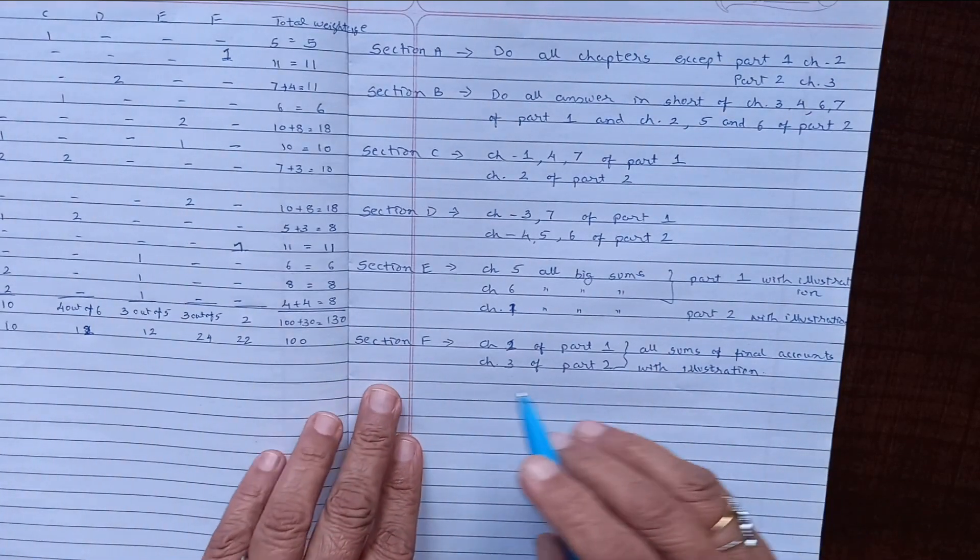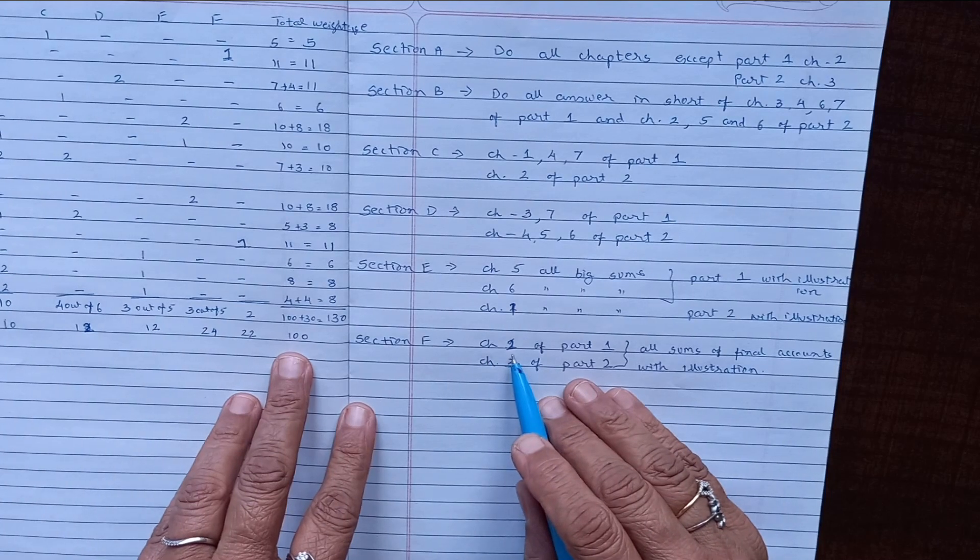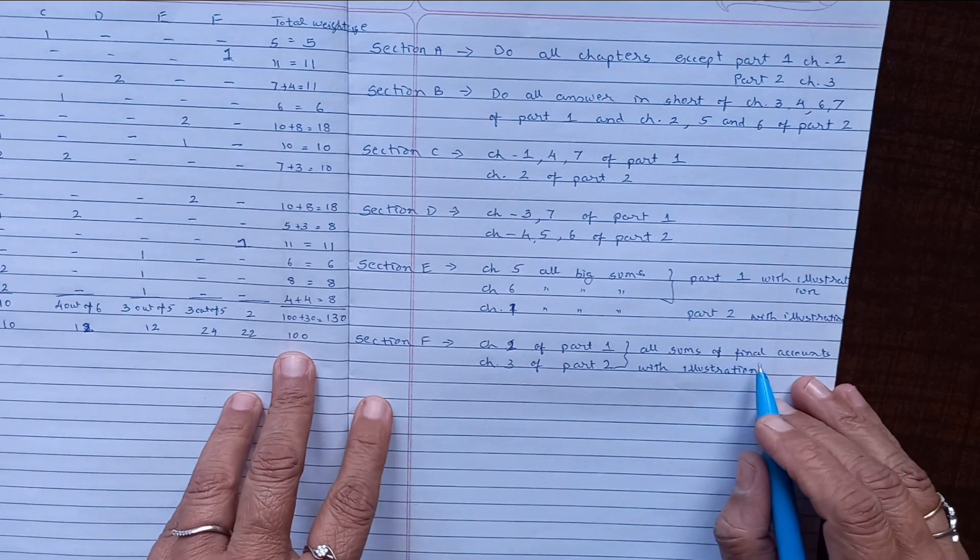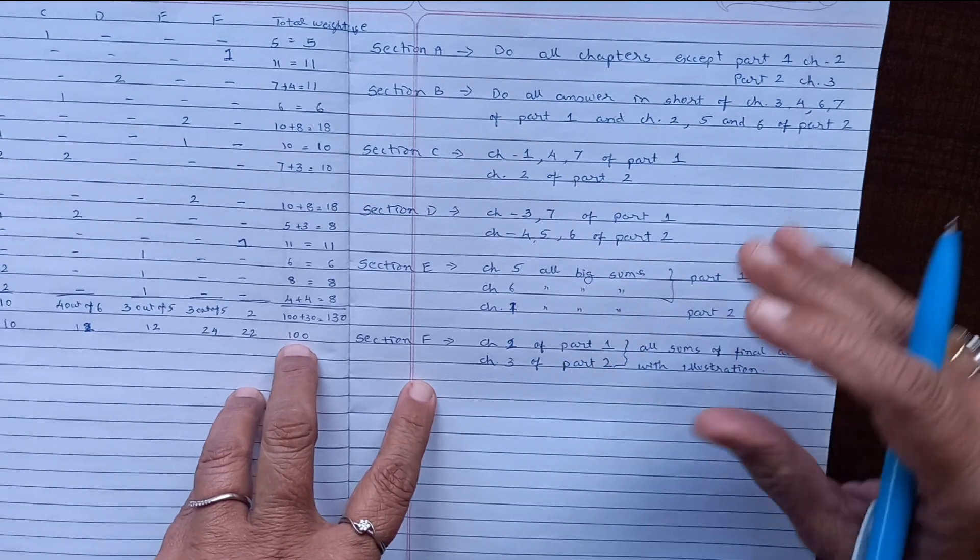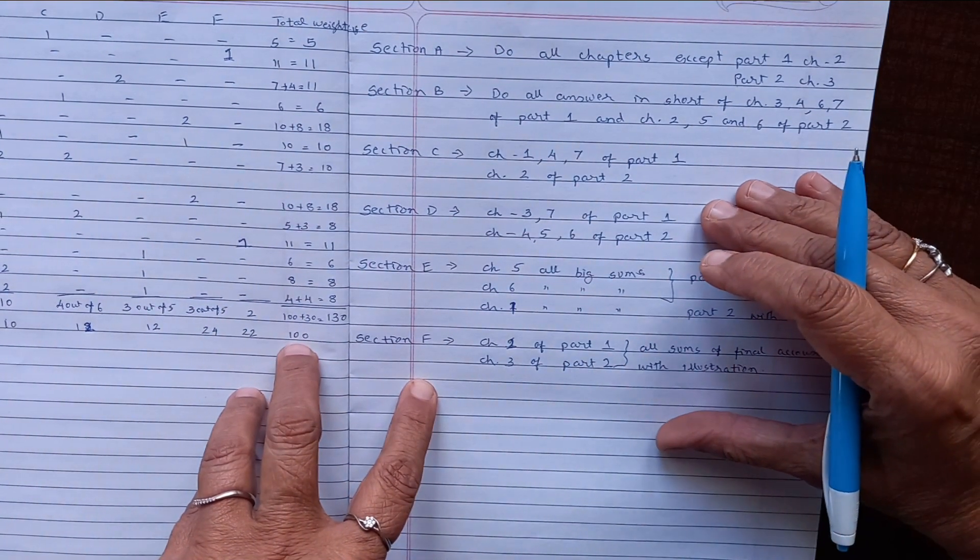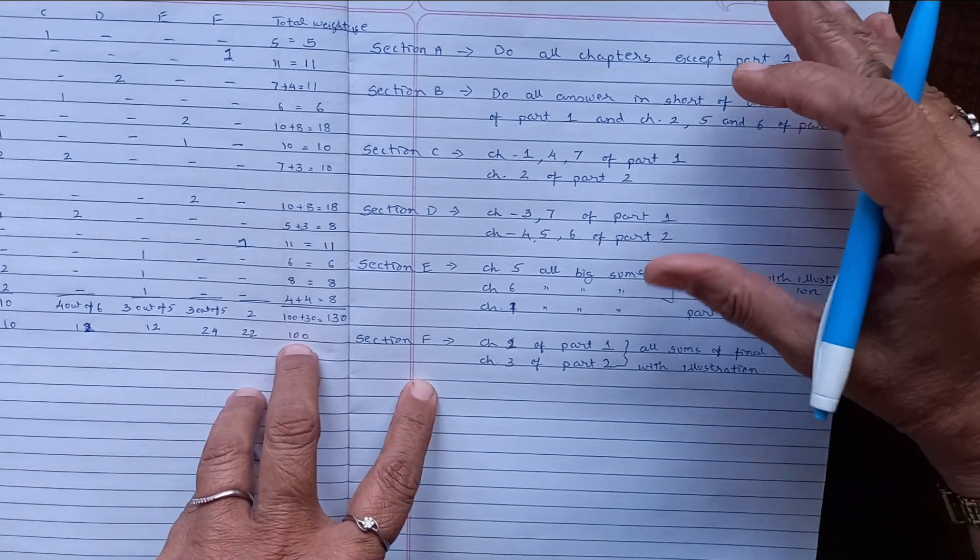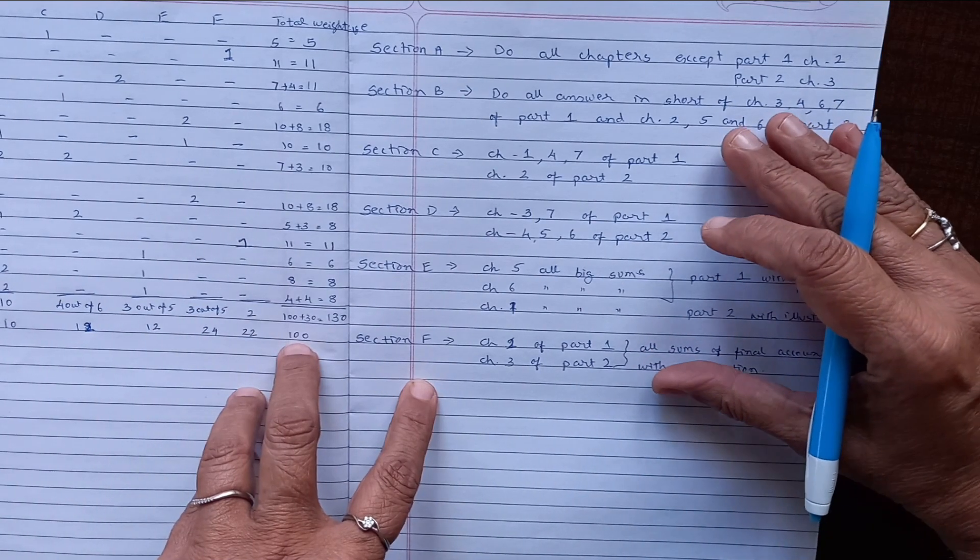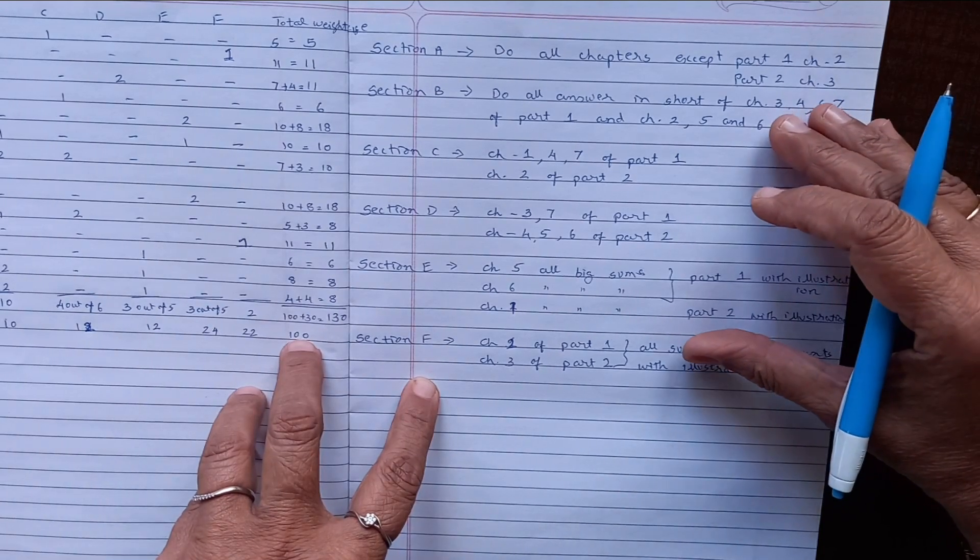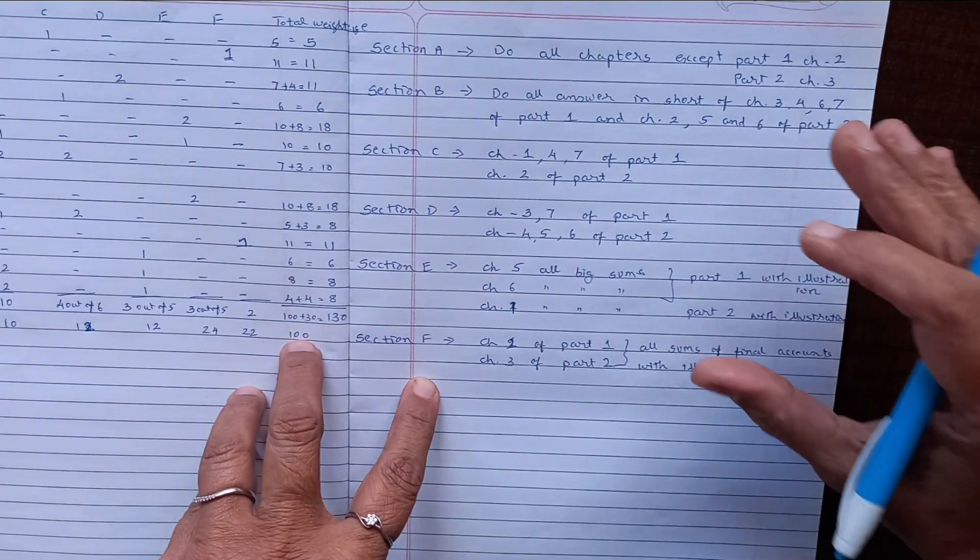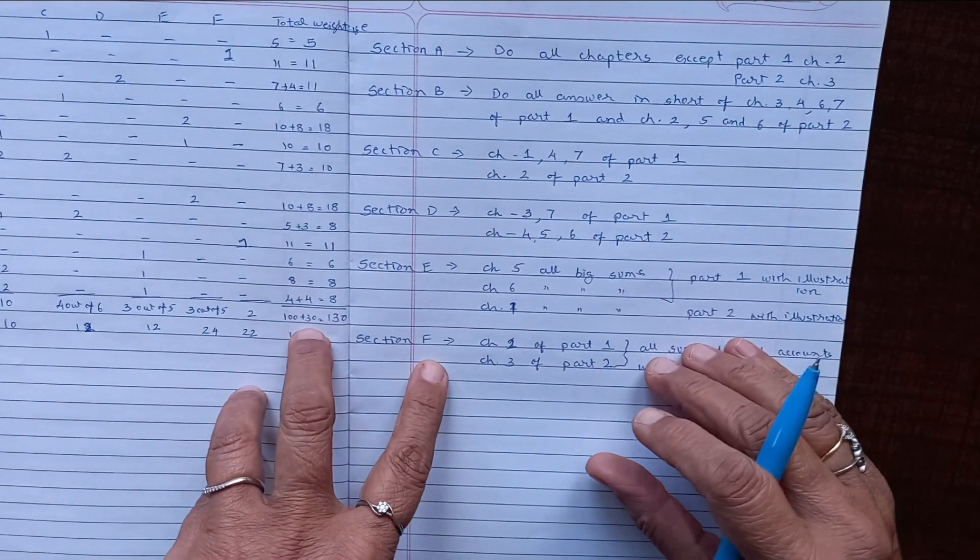For Section F, you have to prepare chapter 2 of part one, that is final accounts. Now, final account questions will have six to seven adjustments, and one or two may be internal adjustments. Maximum seven adjustments will be asked in your board exam paper because the paper also has to be done in three hours, so the length also to be kept in mind.